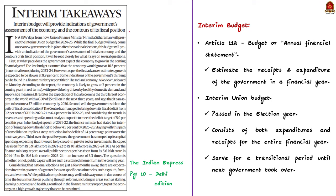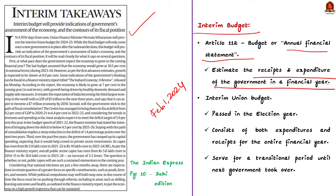This Indian Express article talks about the interim budget which will be presented on February 1st, 2024. This budget will be the last budget of the current government before the election. Let us understand the interim budget and how it is different from a regular budget. According to Article 112 of the Indian Constitution, the budget or annual financial statement estimates the receipts and expenditure of the government in a financial year — for example, budget 2024-25 will cover April 1, 2024 to March 31, 2025.